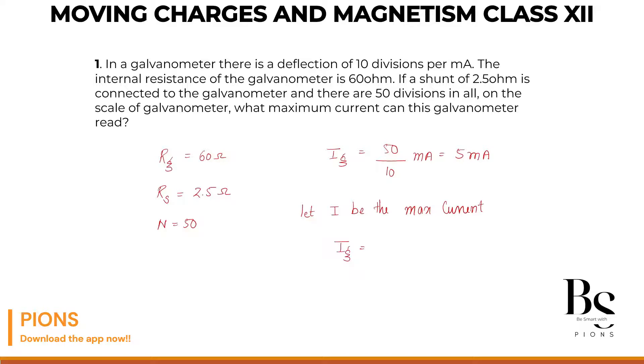Then we know a relation, the current through the galvanometer must be equal to the shunt resistance RS divided by the equivalent of both RG plus RS into maximum current I. I hope this is clear, so I will be equals to IG into RG plus RS whole divided by RS.